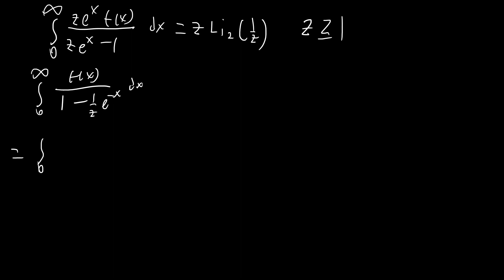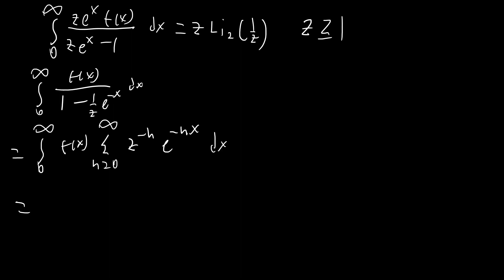So we're going to get the integral from zero to infinity of f of x times the sum from n equals zero to infinity. Since z is greater than or equal to one and x goes from zero to infinity, one over z·e^(−x) always has absolute value less than one, so we can apply the geometric series — this becomes z^(−n)·e^(−nx) dx. We then bring the summation outside, and also bring z outside since it has nothing to do with x.